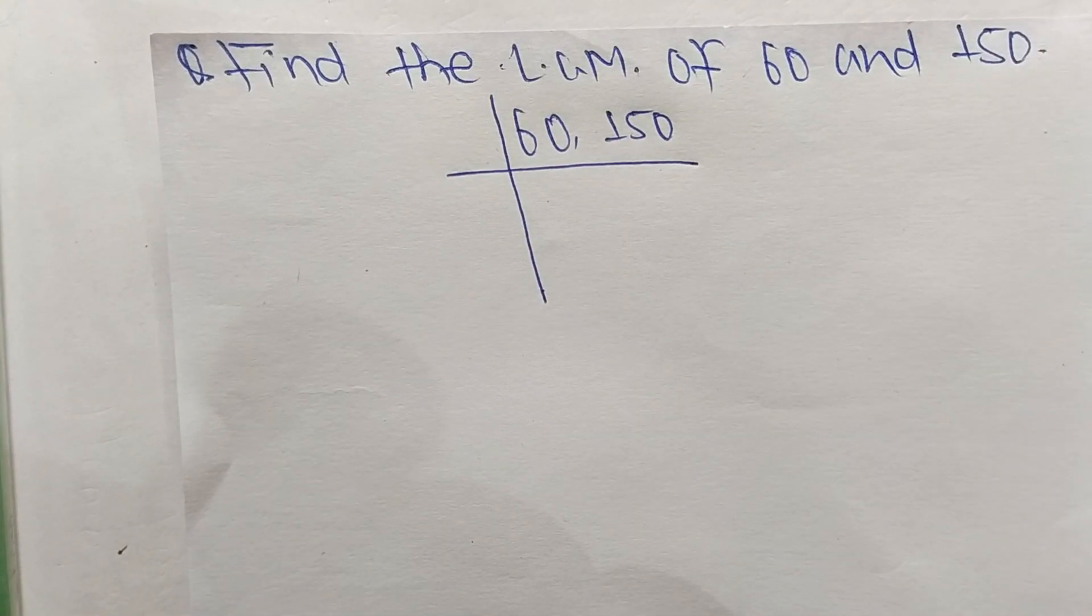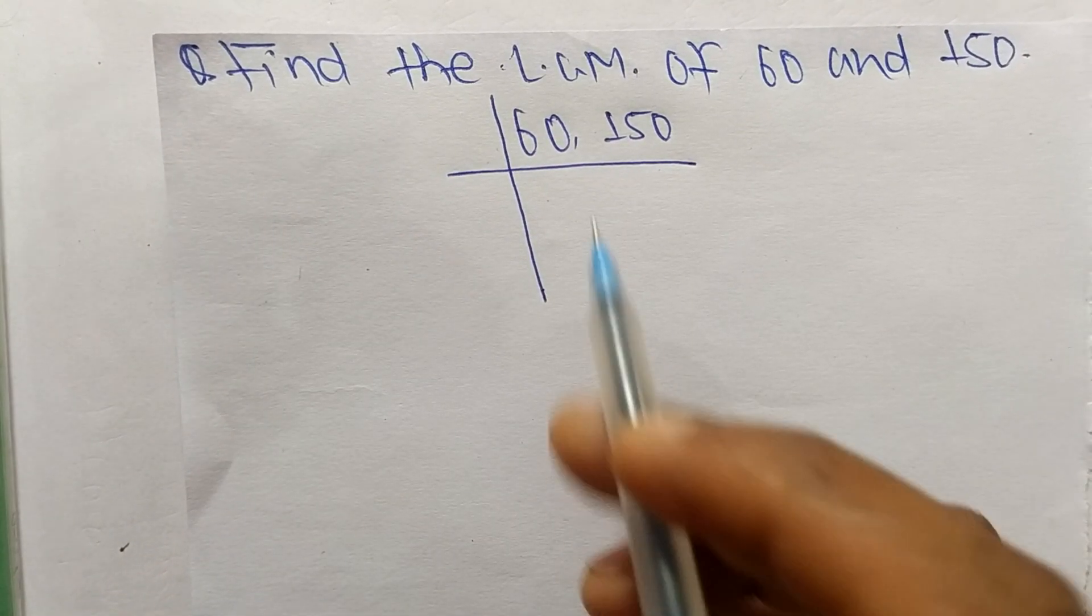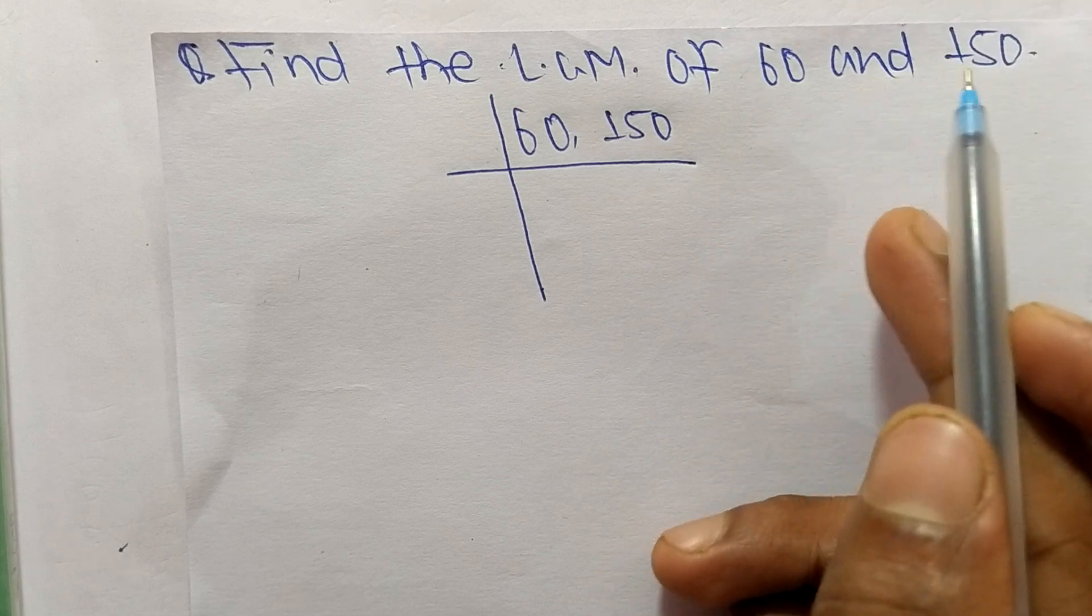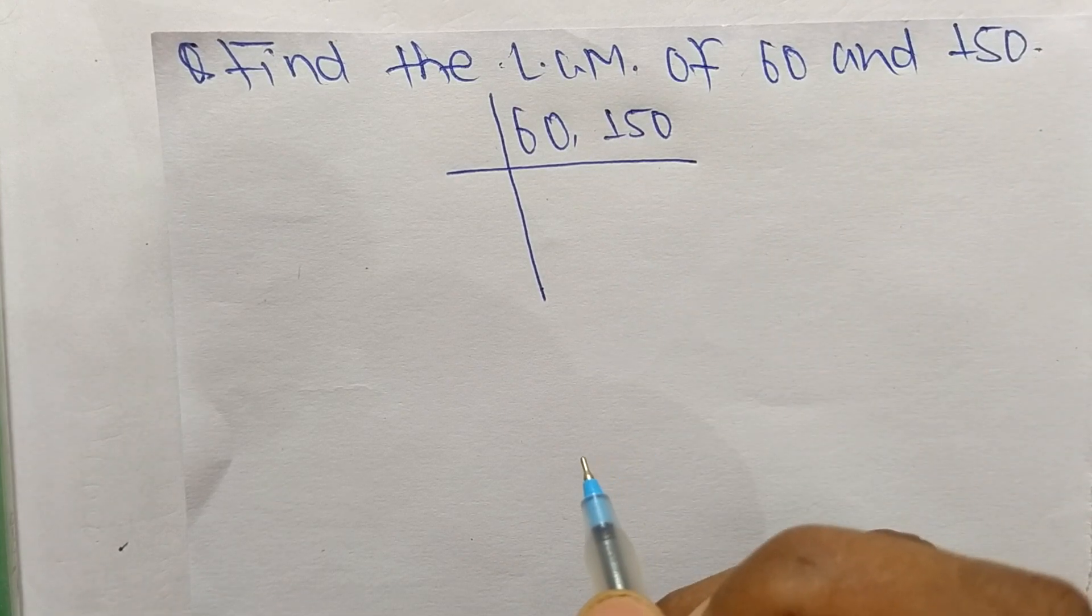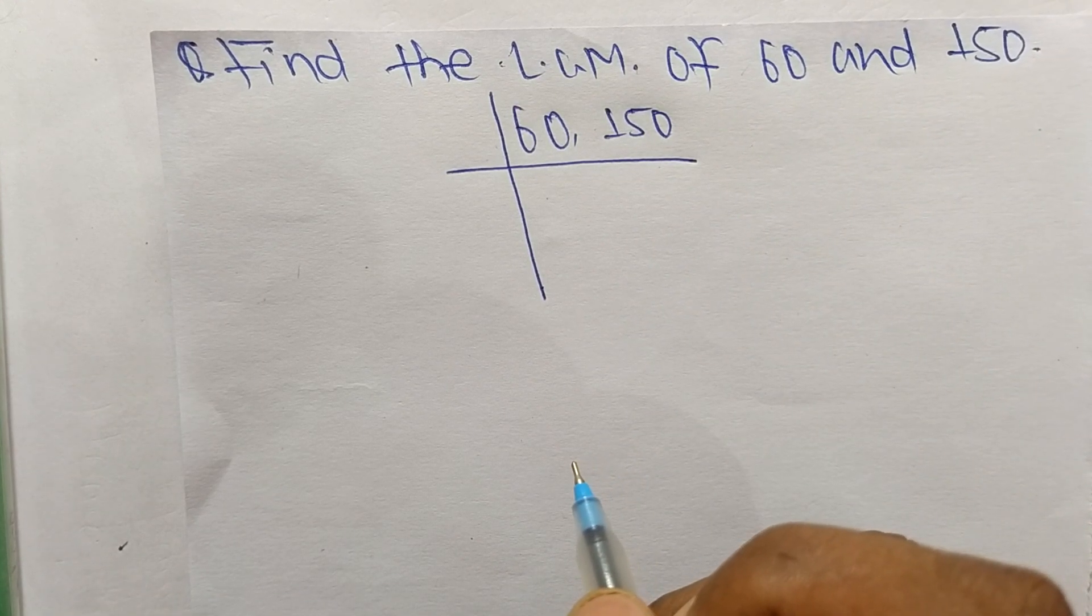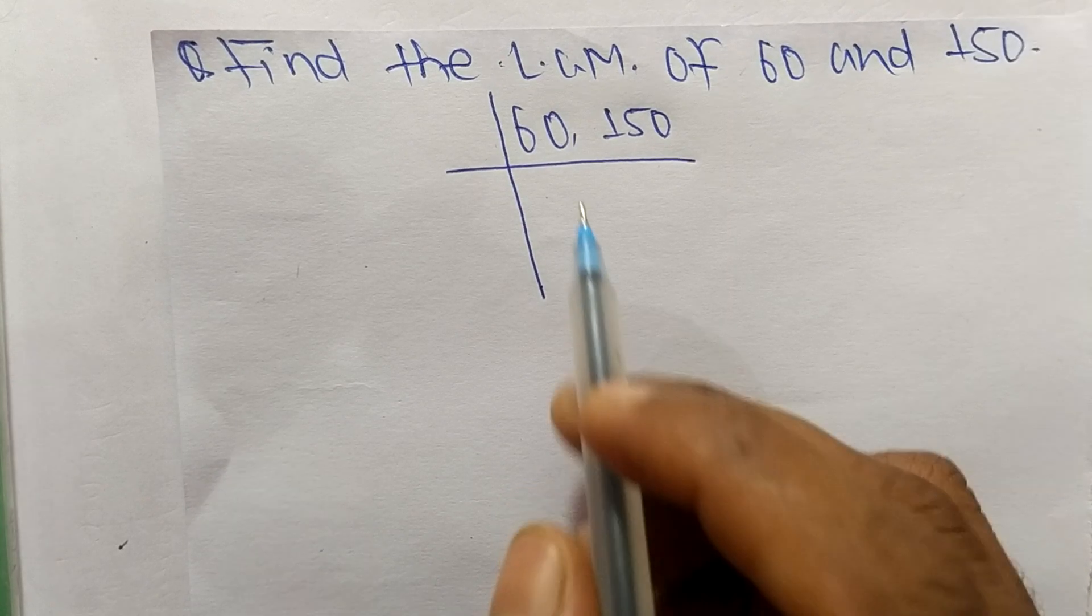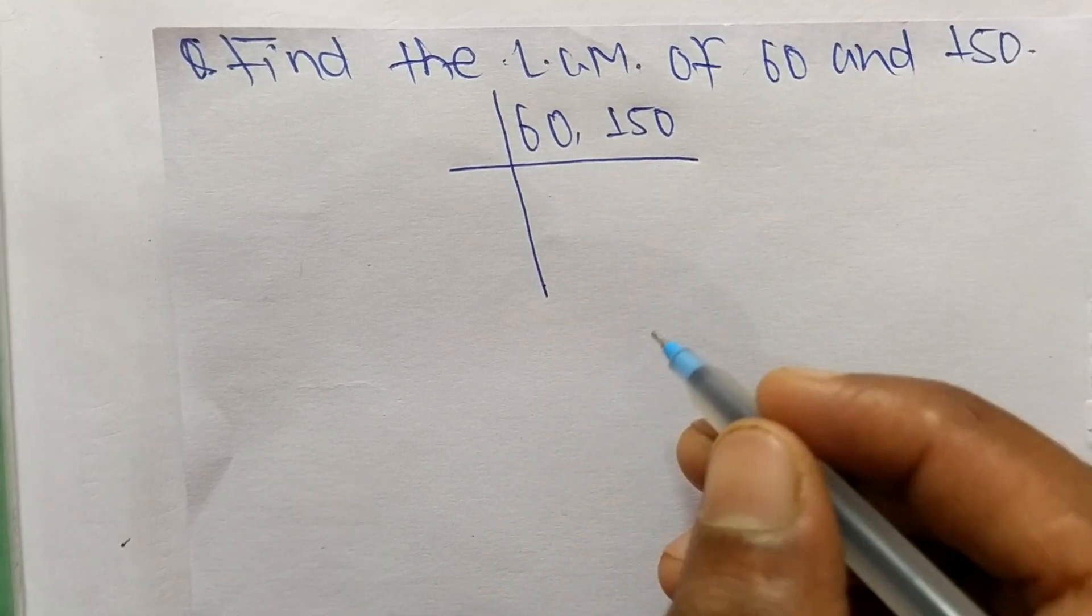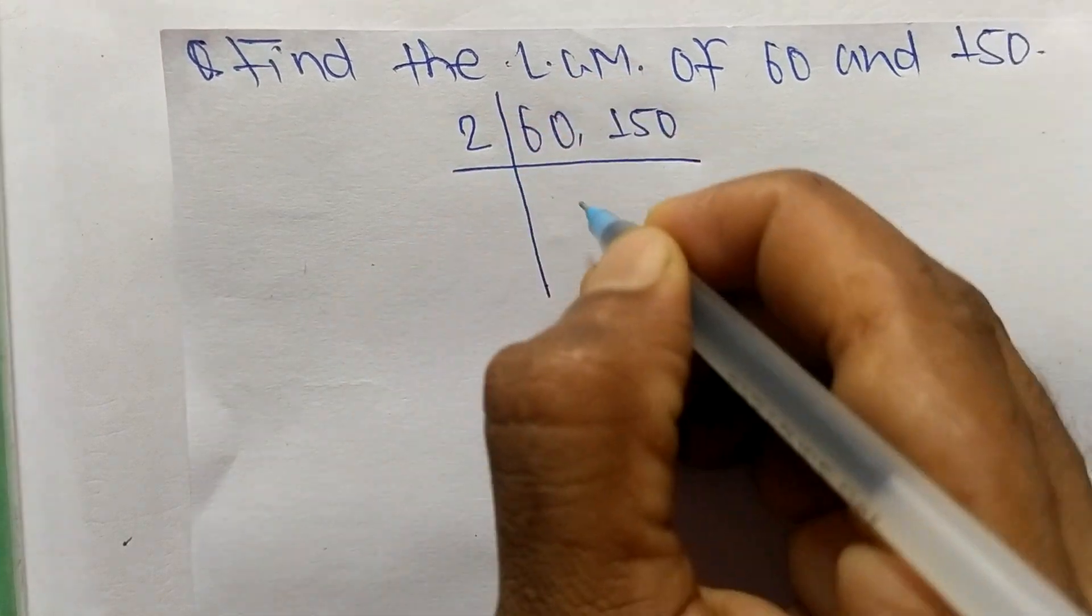Today in this video we shall learn to find the LCM of 60 and 150. To find the LCM, first we choose the lowest number that can exactly divide 60 and 150. The number is 2, so 2 times 30 equals 60 and 2 times 75 equals 150.